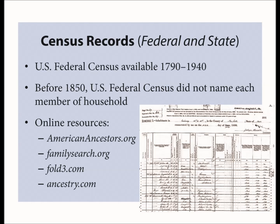Census records can provide information about an entire family, often individually listing the names of each member of the household. However, before 1850, the U.S. Federal Census did not enumerate each member — the head of the household was named and other members were designated by tally marks according to their age and gender. As a result, pre-1850 U.S. Federal Census records can be less helpful and are often not acceptable. You can find these records at AmericanAncestors.org, FamilySearch.org, Fold3, and Ancestry.com, which have searchable collections for U.S. Federal censuses from 1790 to 1940, as well as some state census records.